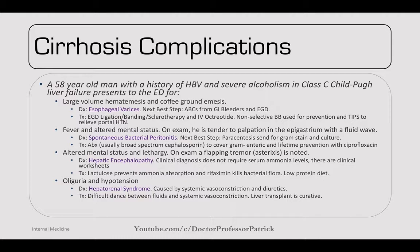If the patient presents with altered mental status, lethargy, and a flapping tremor (asterixis) — diagnosis is hepatic encephalopathy. Clinical diagnosis; serum ammonia levels can be ordered. Treatment: lactulose (prevents ammonia absorption) and rifaximin (kills bacterial flora producing ammonia); lower protein diet. If presenting with oliguria and hypotension — hepatorenal syndrome, caused by systemic vasoconstriction and diuretics. Difficult balance between fluids and systemic vasoconstriction; liver transplant is often the cure.